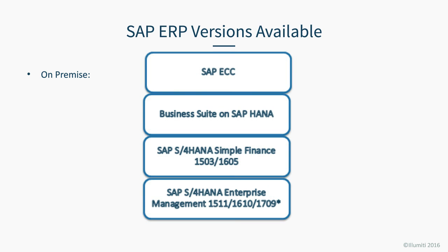Looking at the different deployment options: on-prem, you probably know today that your SAP ECC has different enhancement packs up to eight. You could move from Oracle, SQL, or wherever you are onto a HANA database — that gives you the HANA Live reporting capability. Or you have Simple Finance solutions, which are just the finance area simplified with new structures and enhanced Fiori experiences. Then you have the full Enterprise Management solutions with three major releases: 1511, 1610, and currently coming out, greatly anticipated, 1709. Those numbers represent the year and month in which SAP released them.